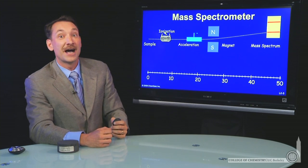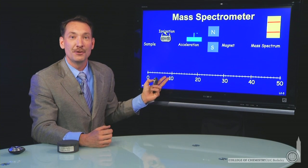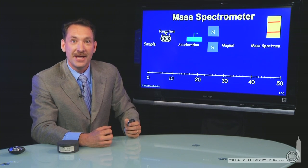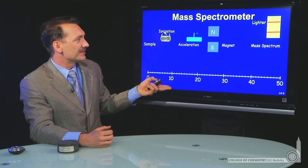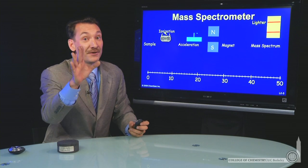So what the output of the instrument looks like is a mass axis that will tell you the mass of the particles that you injected. And there'll also be a vertical axis. And the vertical axis will tell us about how many particles there were. And that's very useful.